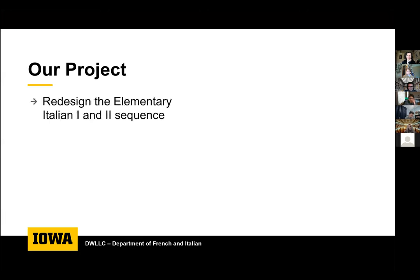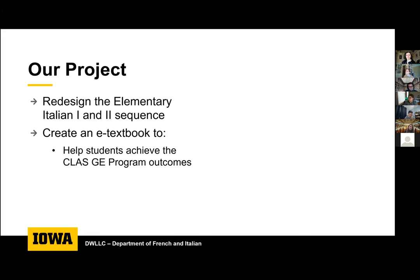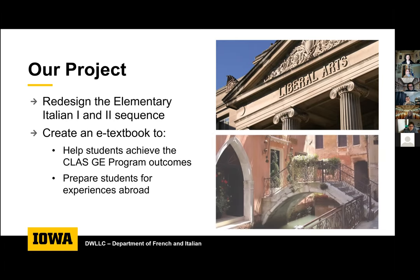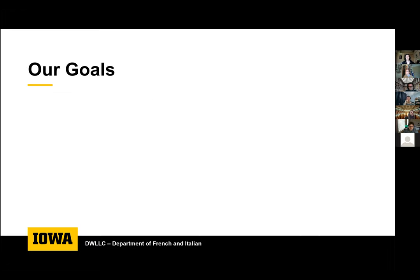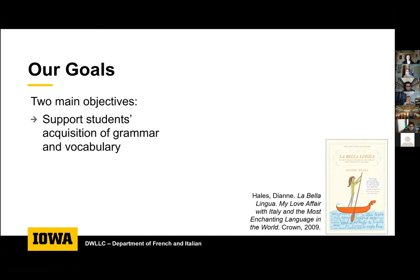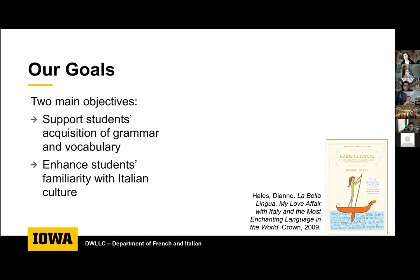Our project comes from our idea to redesign the entire elementary one and elementary two sequence and to create an e-textbook with two main objectives. First, we wanted to help students achieve the GE program outcomes — many students take elementary one and two to fulfill the language requirement. At the same time, we wanted to prepare students for experiences abroad. We also want students to appreciate the importance of learning Italian, known as la bella lingua, and to enhance their familiarity with Italian culture.